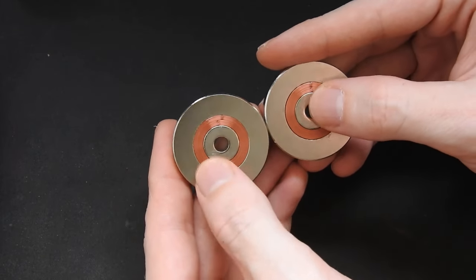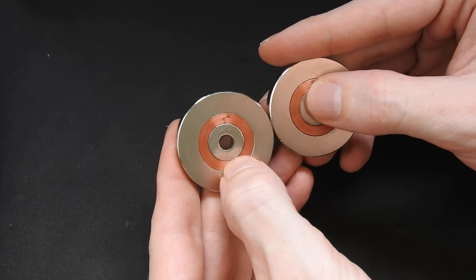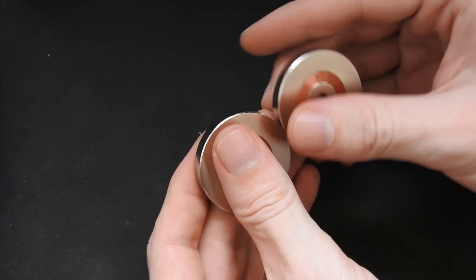Inside we also have a smaller ring magnet. The copper color part is just a plastic spacer that I 3D printed, so it just holds the center magnet in place.